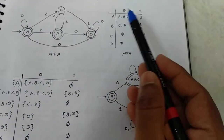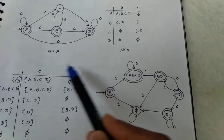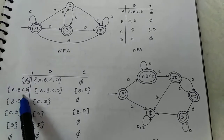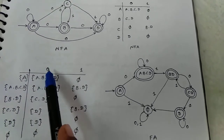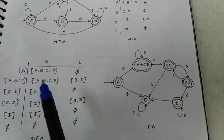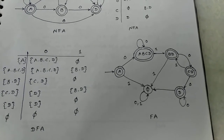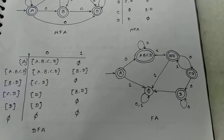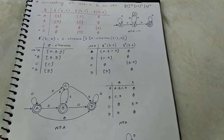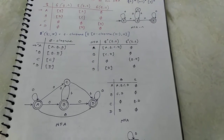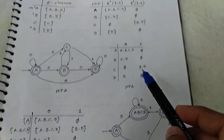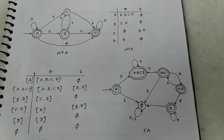Here A to 0 gives state {A,B,C,D} and A to 1 gives empty. {A,B,C,D} is a new state, so consider it as an input state and construct the subset construction for {A,B,C,D} — as already discussed in previous videos on how to convert NFA to DFA. If in an exam they ask NFA-epsilon to DFA, then there is no need to draw the NFA; directly draw the DFA according to the NFA transition table. Thank you.